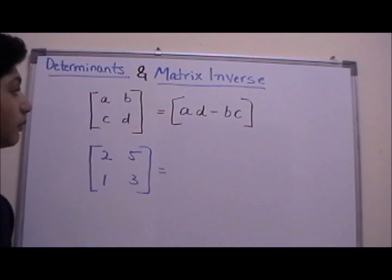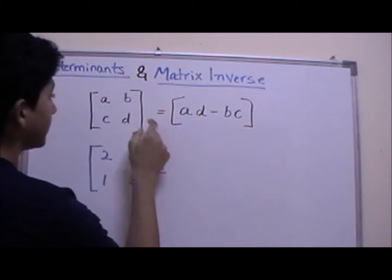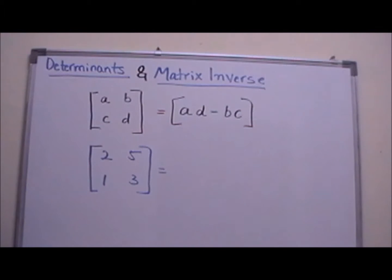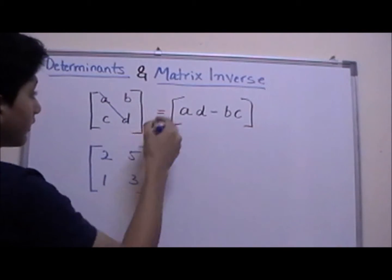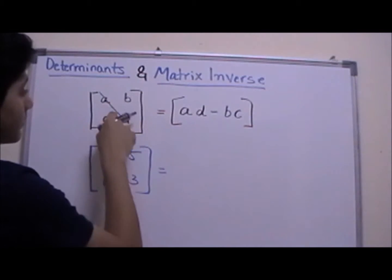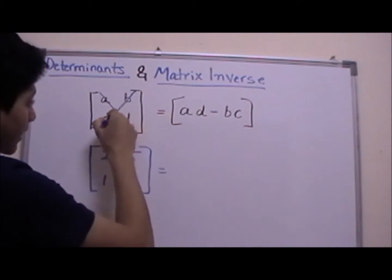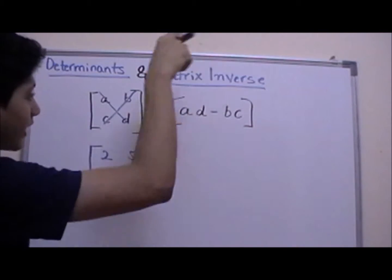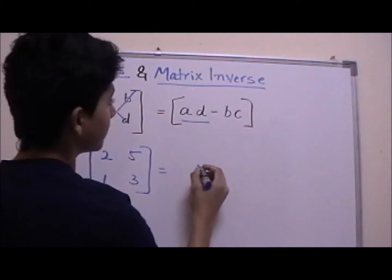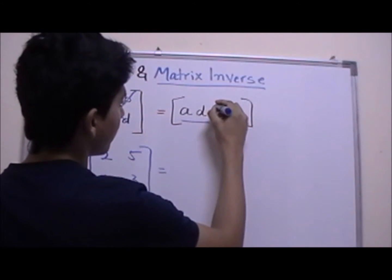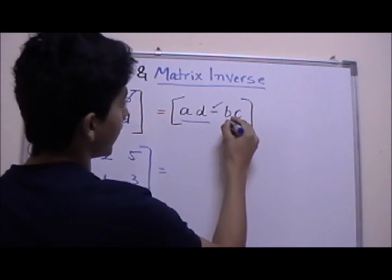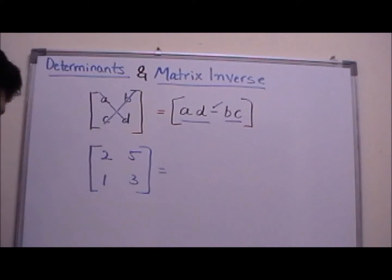In your textbook the formula might say A times D minus B times C. To make it easier to remember, think of the cross — or X — sign. A times D, then a minus sign in the middle, then B times C. Just remember the X and the minus sign in the middle.